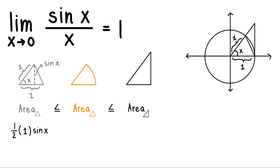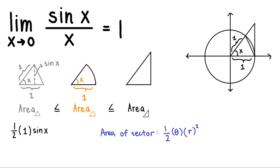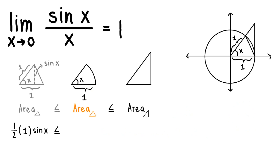Now for the second region — the sector. The area of a sector of a circle is given by one-half times theta times r squared, where theta is the angle and r is the radius. Applying this to our figure, we have one-half times x (the angle) times 1 squared (the radius). So the sector area is one-half times x.